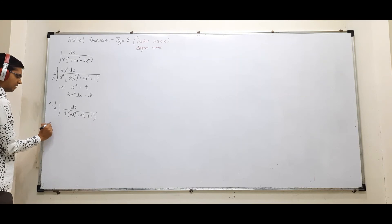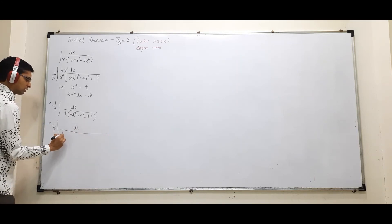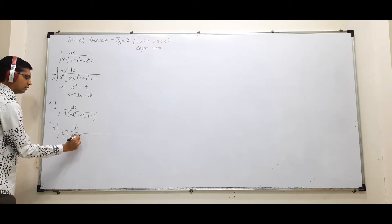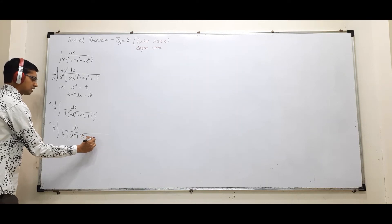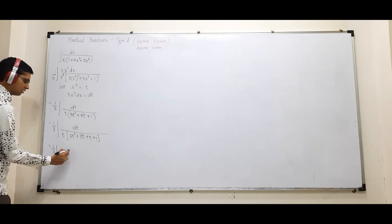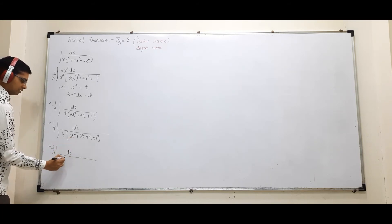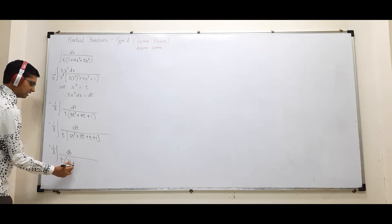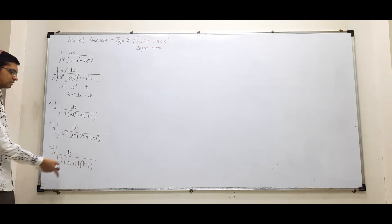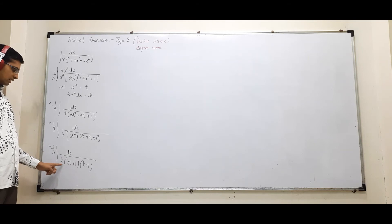After substitution it becomes (1/3)∫dt/(3t²+4t+1). Factorize 3t²+4t+1: multiply 3×1=3, find factors adding to 4 — that's 3 and 1. So 3t²+3t+t+1 = 3t(t+1)+1(t+1) = (3t+1)(t+1). The integral becomes (1/3)∫dt/[(3t+1)(t+1)]. Degrees are same and factors are different — this is like the previous Type 1.